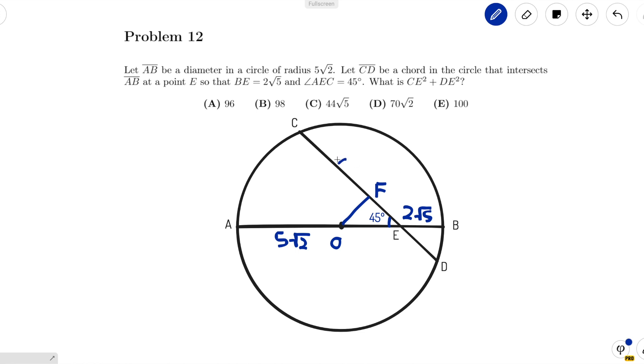Now, if we let CF equal X and FE equal Y, well, since CF and FD are the same, ED is just equal to X minus Y. And since OEF is a 45-45-90 triangle, OF equals FE since it's isosceles, so that means OF is also equal to Y.